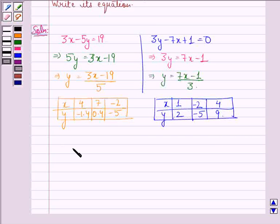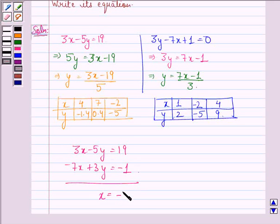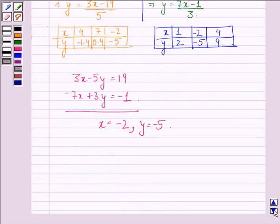Because we see that, when we solve 3x minus 5y equal to 19 and minus 7x plus 3y equal to minus 1, we get x as minus 2 and y as minus 5. So, our answer to first part is minus 2, minus 5.